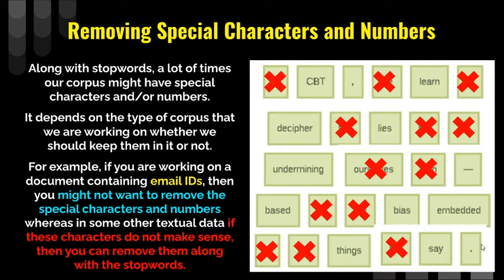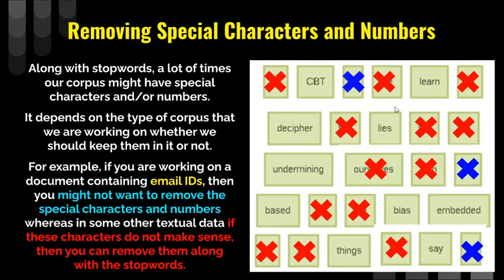We also need two more removals - removing special characters and numbers. Along with stop words, our corpus might have special characters or numbers like comma, full stop, dash, inverted comma, exclamation mark. It depends on the type of corpus whether we should keep them or not. In some cases we need this information - for example, if we have email IDs in our document then we cannot remove these special characters. So it depends on the context. In some other textual data if these do not make any sense then we can remove them.